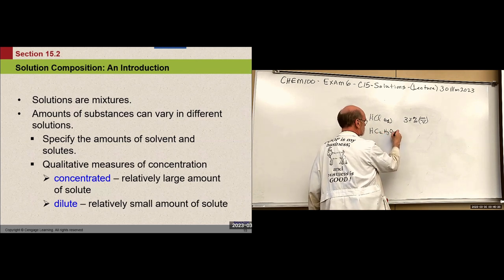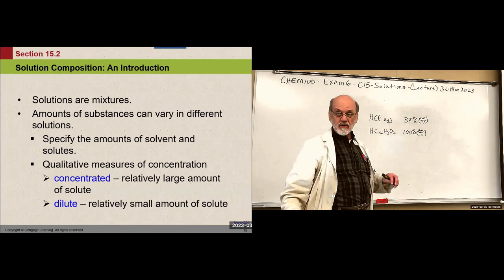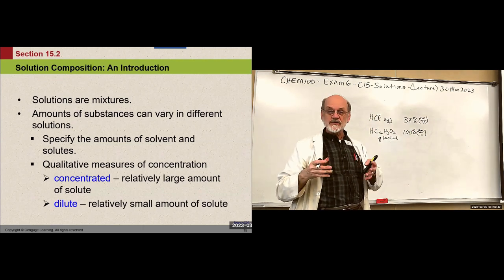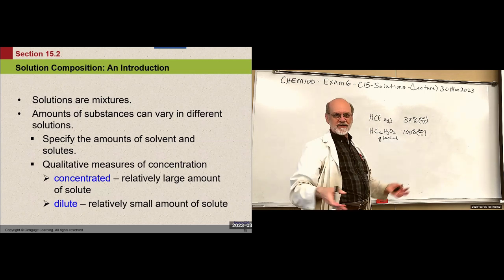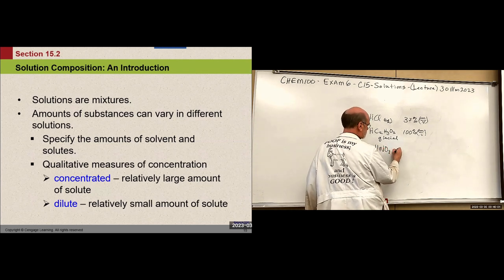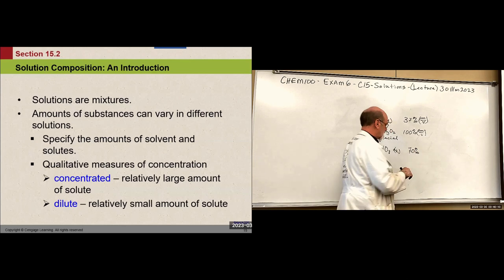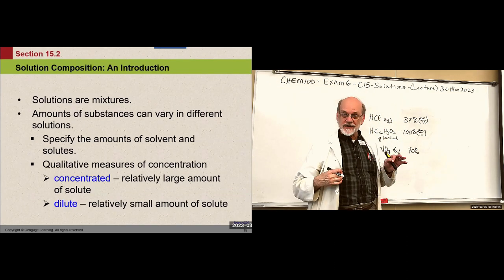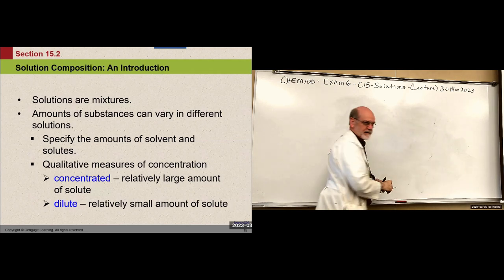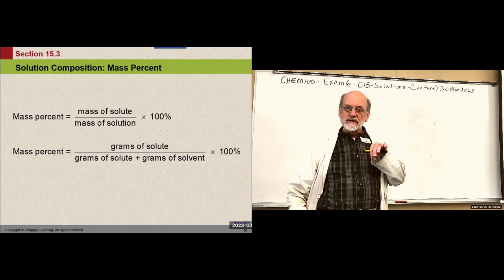You can have acetic acid at 100% — that's called glacial acetic acid — or lower concentrations that are still concentrated. 100% is the most concentrated you can get; you can't go above 100%. Or nitric acid — I used to use nitric acid in the laboratory at 70%, very dangerous, but it's concentrated. There are various ways to express the amount of solute in a solution.